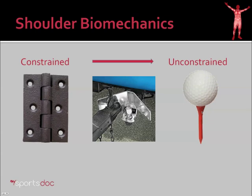And then finally a golf ball and a golf tee. Obviously this is very unconstrained — the ball can move in any direction.